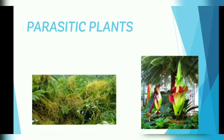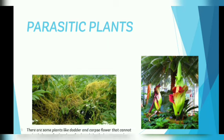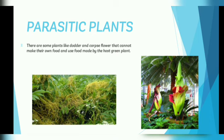Next is parasitic plants. These are plants like dodder or corpse flower that cannot make their own food and use food made by the host green plant. Therefore, they are called parasitic plants.